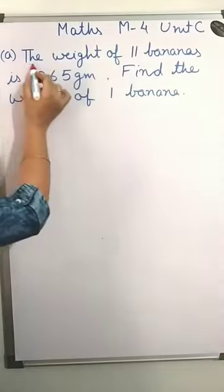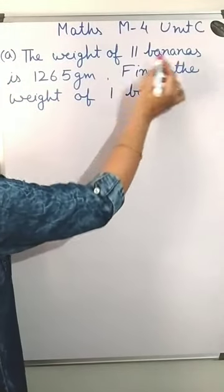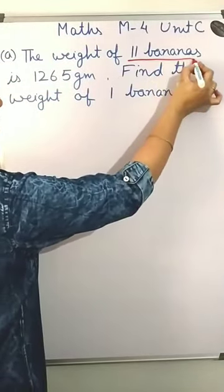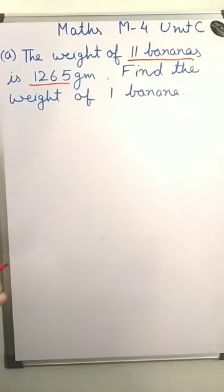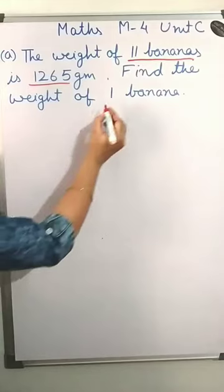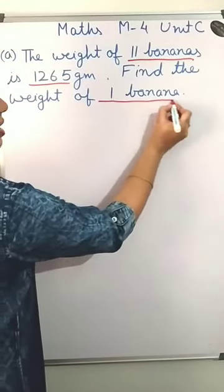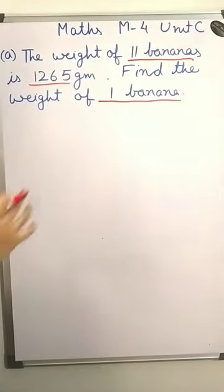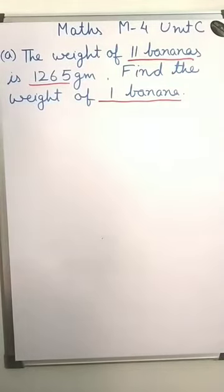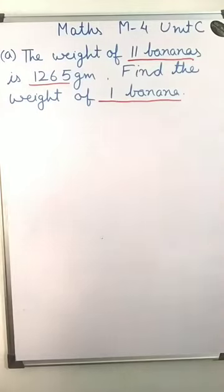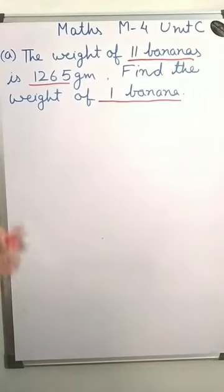Here the question is: the weight of 11 bananas is 1265 grams. Find the weight of 1 banana. Means the value of many is given to you and you have to calculate the value of 1. So whenever you have to calculate the value of 1 and the value of many is given to you, you divide.